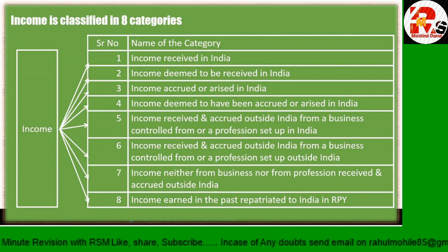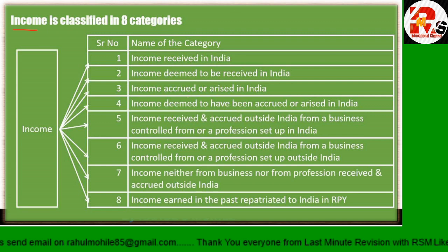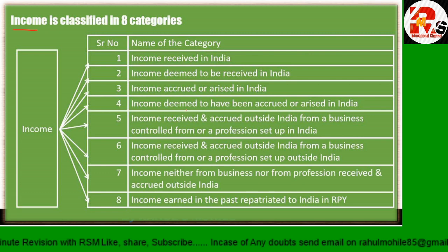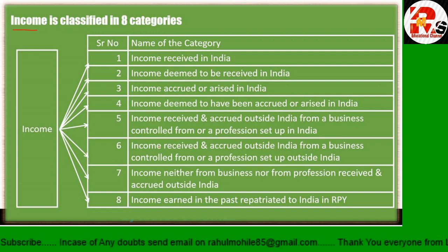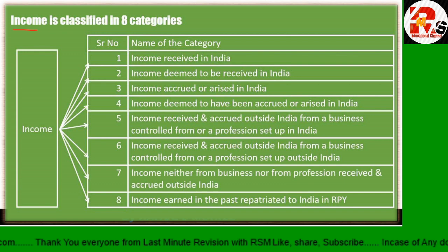Income - we had studied income in the important definitions and discussed about person and income. In total, income is divided into 8 categories: income received in India, income deemed to be received in India, income accrued or arising in India, and income deemed to have been accrued or arising in India. I have a simple thumb rule - if you remember the three rules, the questions will be straightforward.